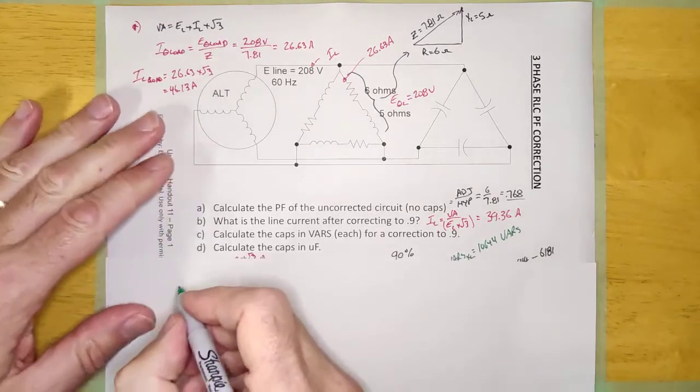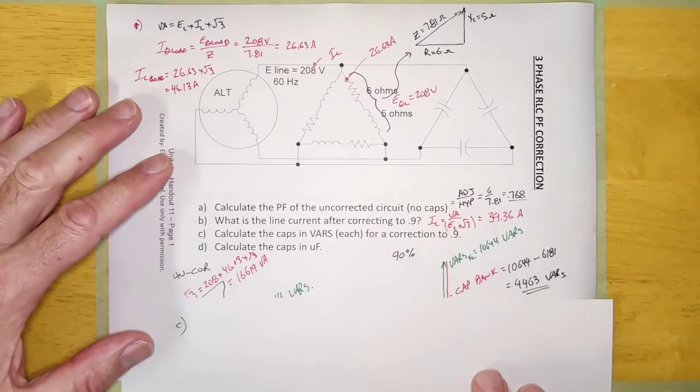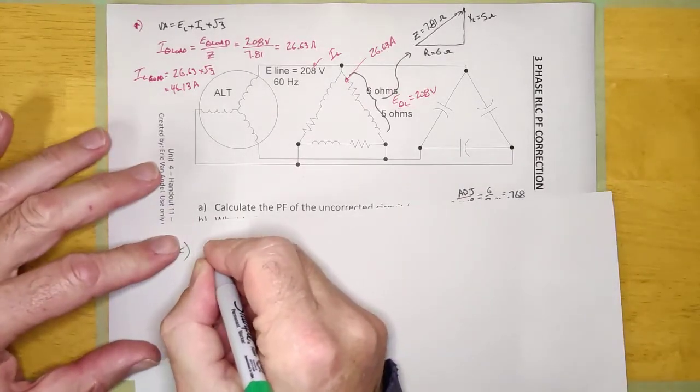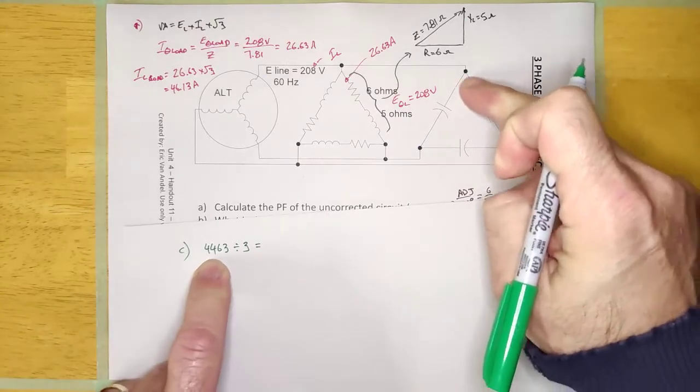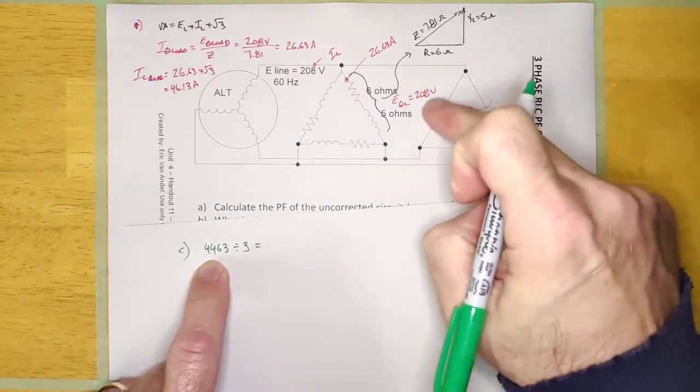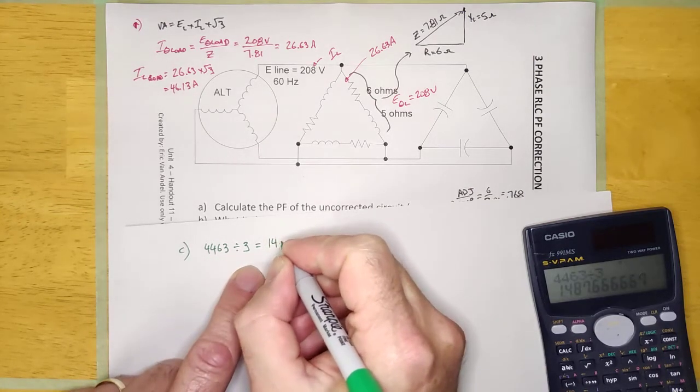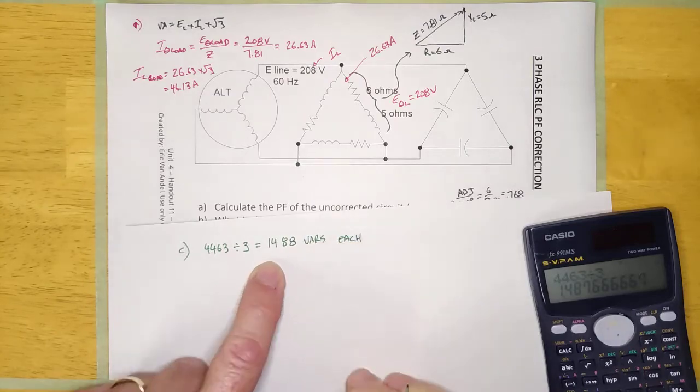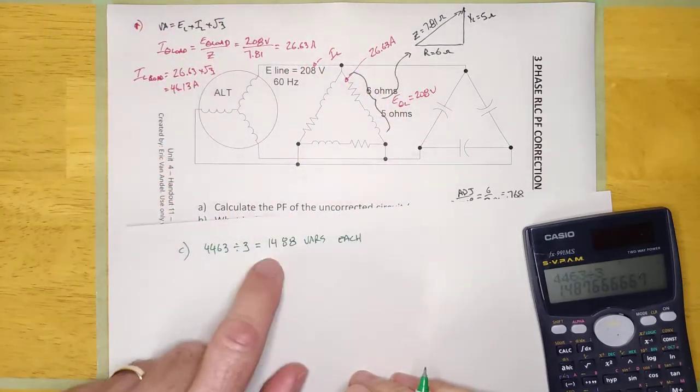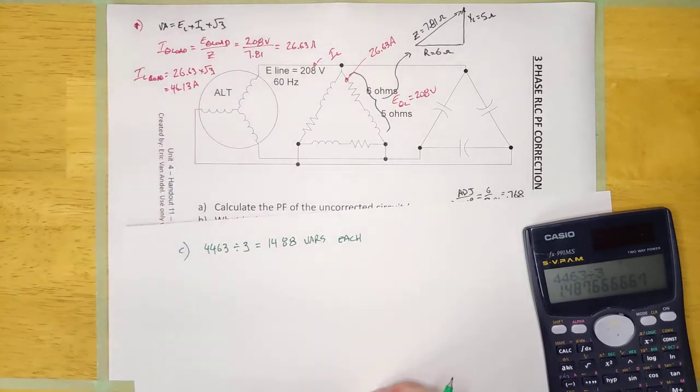All right guys. So C, calculate the caps in VARs each to correct the 0.9. Well, there's my cap bank. So it's 4,463. So it is 4,463 divided by 3. This whole bank here is 4,463 VARs. And since there are three of them, I can just divide that by three and I'll get each of them. 4,463 divided by 3. Looks like they're going to be 1,488 VARs each. Now, why do I keep getting you guys to calculate how many VARs those are each? Well, because if you were actually doing this power factor correction, that's what you'd have to order. 1.5 KVARs, three of them. Connect them in delta and you'd correct this crazy thing.